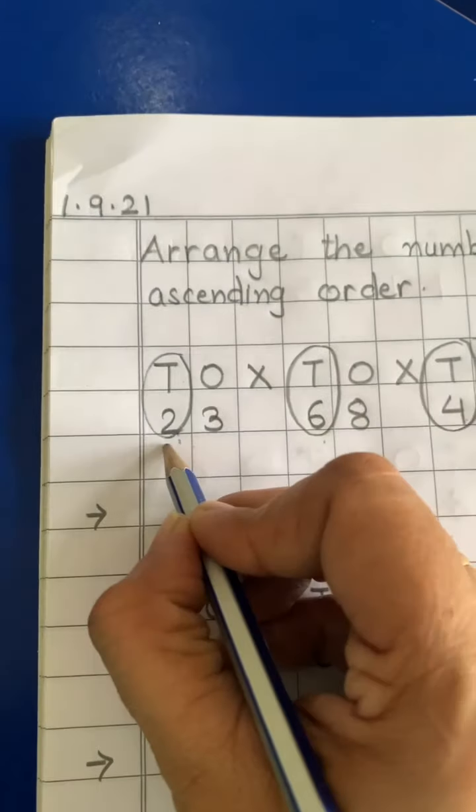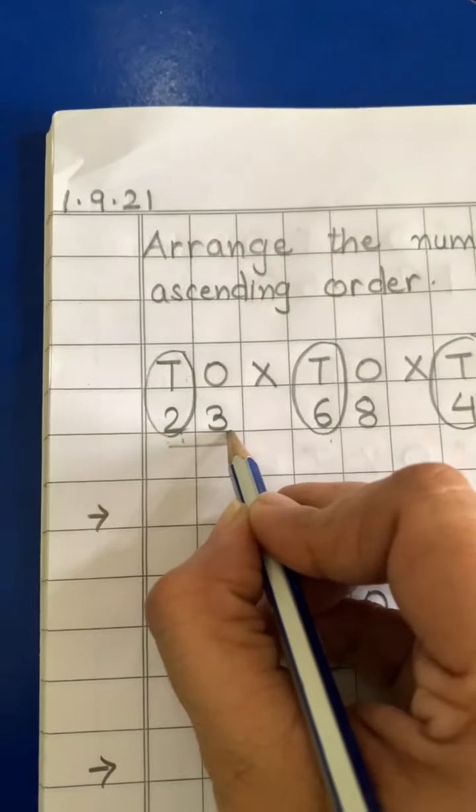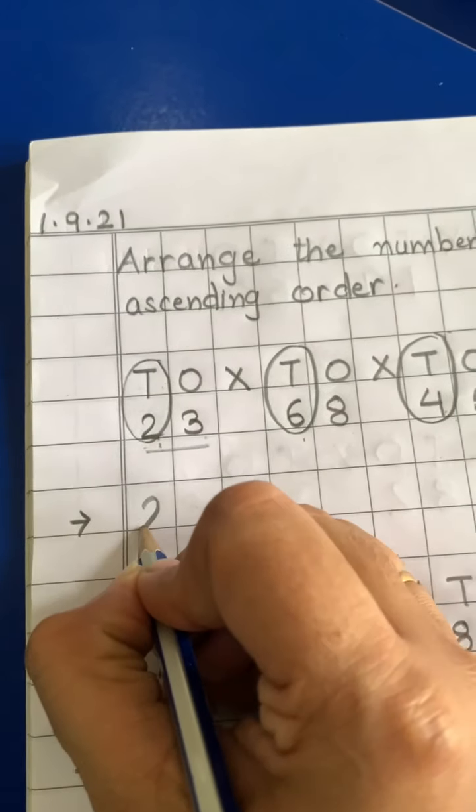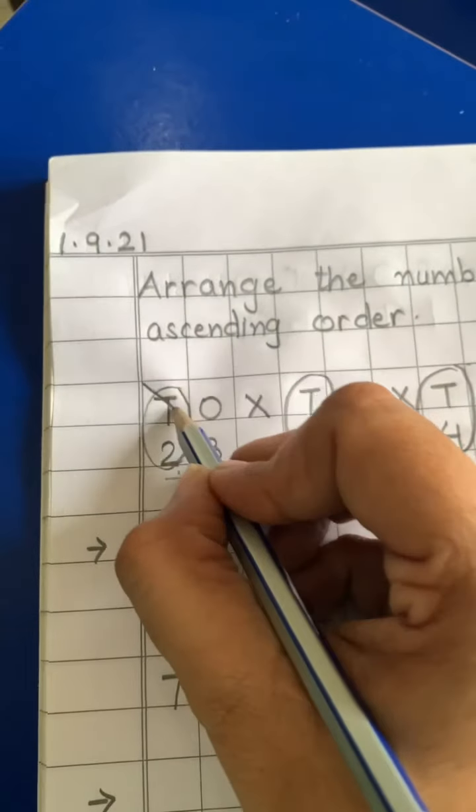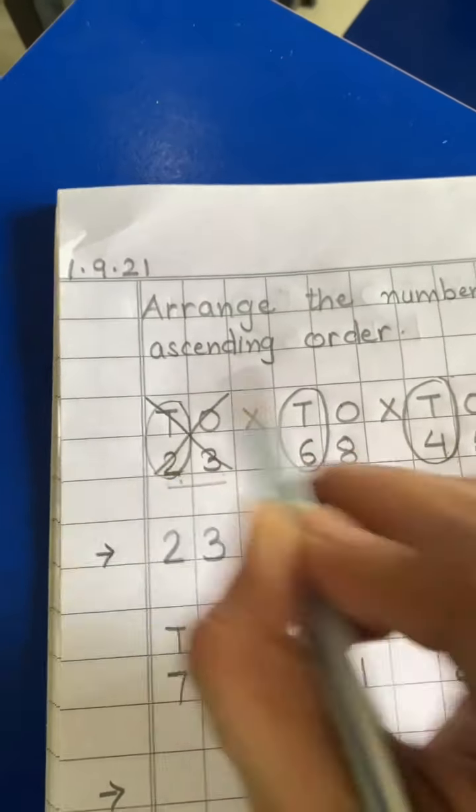So number 23 jo hai, woh sabse small number hai. So we'll write here. Sabse pehle 23 likhenge aur 23 cross karenge. Okay?